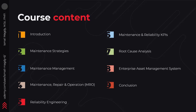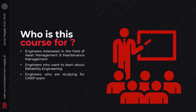Finally, the ninth chapter is going to have a brief summary of the course as well as some important references. This course is going to be very useful to all engineers who are interested in starting a career in the field of maintenance management or asset management, as well as engineers who want to understand more about the concept of reliability engineering. Also, this course is going to be useful for engineers who are interested in obtaining the CMRP certificate, as it covers many points of the exam syllabus.